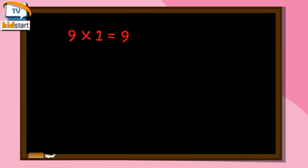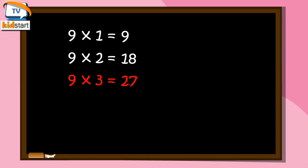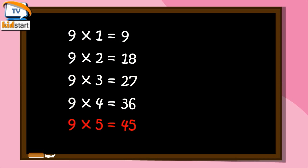9 ones are 9, 9 twos are 18, 9 threes are 27, 9 fours are 36, 9 fives are 45.